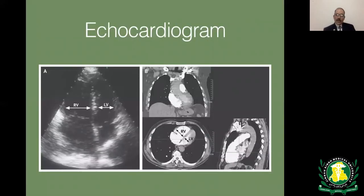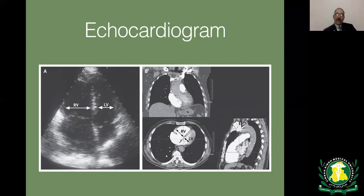On echocardiogram, a four-chamber view normally shows the right ventricle smaller than the left. When the RV-to-LV ratio exceeds 1, this indicates RV dysfunction — a sign of acute massive PE. Other echocardiographic signs include paradoxical movement of the interventricular septum and the D-sign on left parasternal short axis view. RV enlargement relative to the LV can also be seen on CTA.